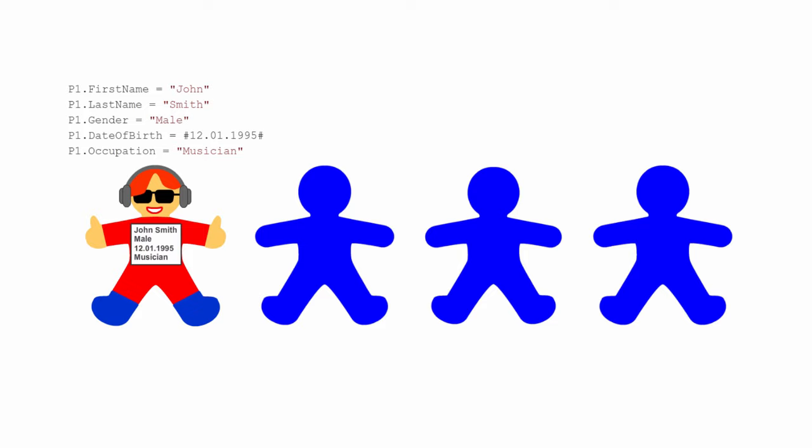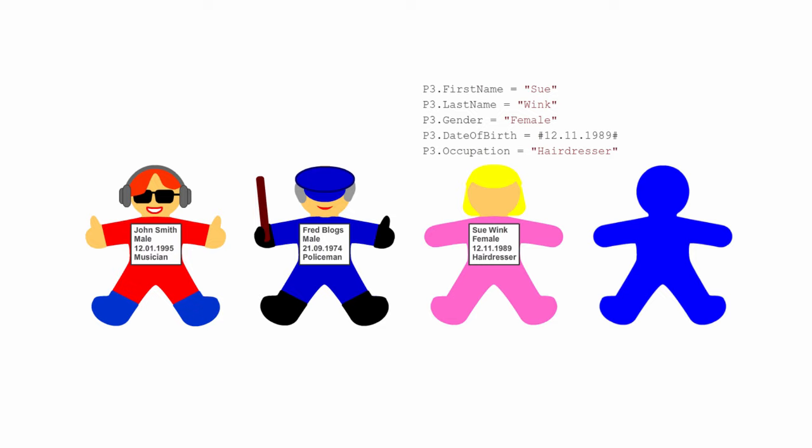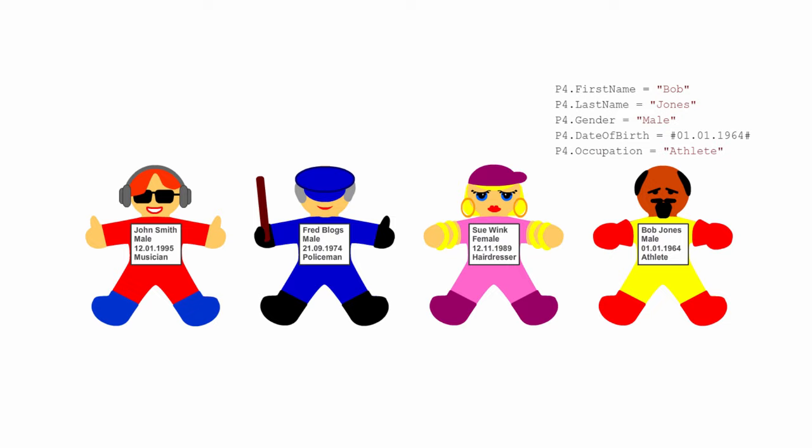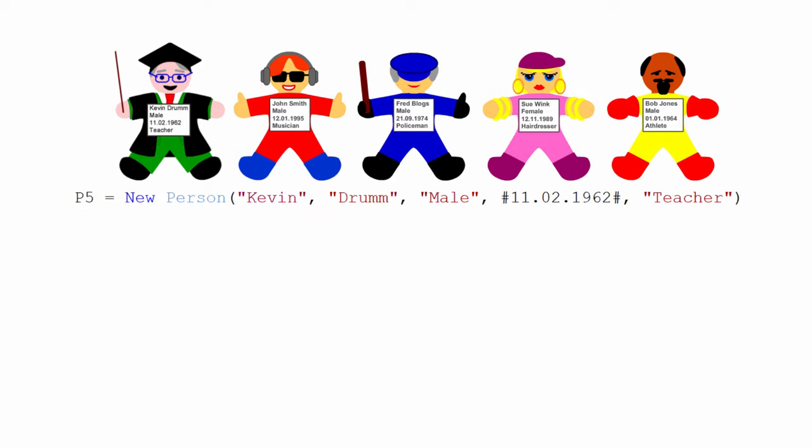Each property is defined in the class by a property procedure, which may include code to validate a property value while it's being assigned. This helps to ensure the integrity of the data contained within the object. The property values that have been assigned to an object are collectively known as the state of the object. It's also possible to assign values to properties while an object is being instantiated, by means of a special method called new. This method is known as the constructor.